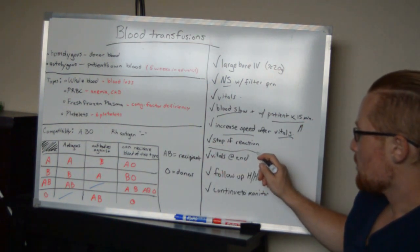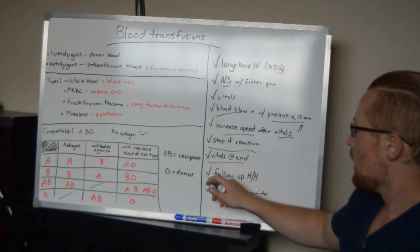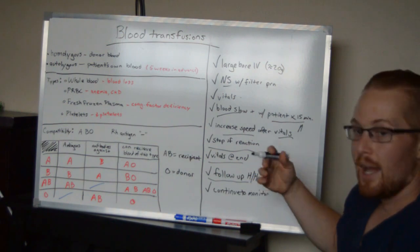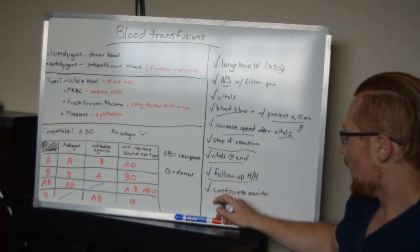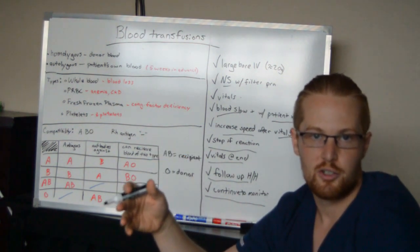If there's any reactions, you stop immediately or you can call the doctor. At the end, you go ahead and do another set of vitals. Typically, doctors have a follow-up hematocrit and hemoglobin. And then you want to continue to monitor the patient after the blood transfusions because not all reactions are immediate.